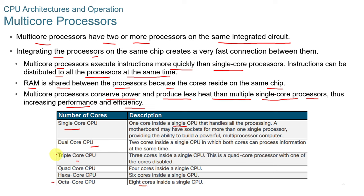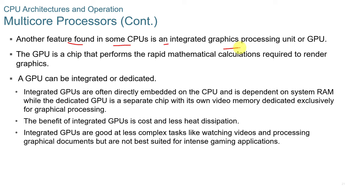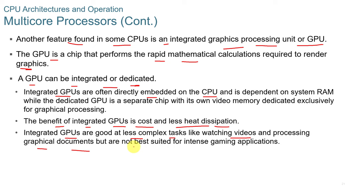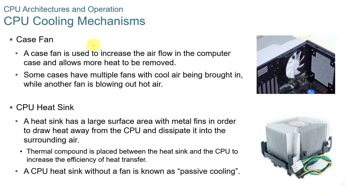Manufacturers are working on adding even more cores — by the time you watch this, there may be more than eight. Some CPUs also include an integrated Graphics Processing Unit, or GPU. The GPU is a chip that performs rapid mathematical calculations required to render graphics. A GPU can be integrated directly on the CPU or dedicated separately. Integrated GPUs depend on system RAM, cost less, and produce less heat, making them good for less complex tasks like watching videos, but they're not suited for intense gaming. For high-end gaming, you want a dedicated GPU outside the CPU.